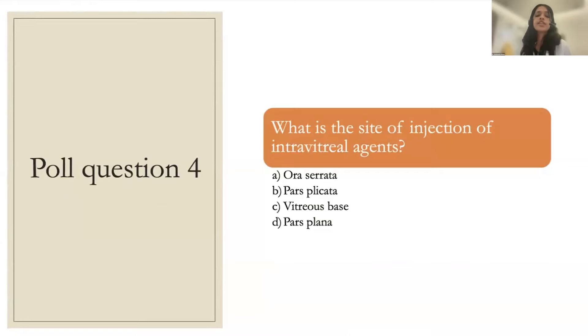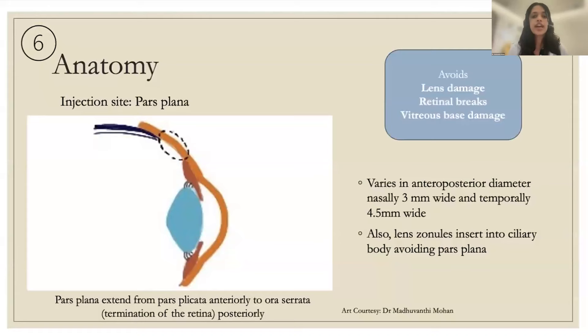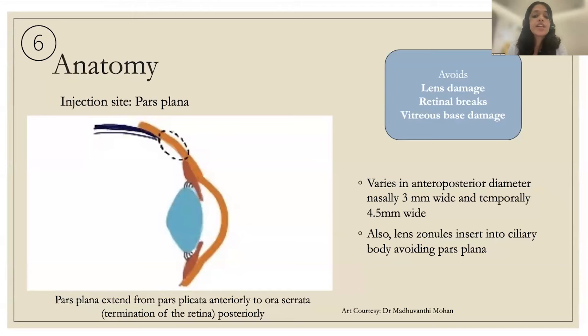Poll question: What is the site of injection? The answer is the pars plana. Tip six — anatomy: the injection site is the pars plana, which avoids lens damage, retinal breaks, and vitreous base damage. It extends from the pars plicata anteriorly to the ora serrata posteriorly. Nasally it is 3 mm wide; temporally it is slightly wider, making the temporal side slightly more preferred. Lens zonules insert into the ciliary body, avoiding the pars plana, making it an ideal injection position.